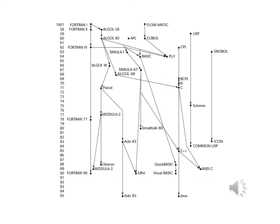The chart shows how the evolution of various programming languages took place. You can see how Fortran 1 led to Fortran 2, and in turn to Fortran 4, Fortran 77, and Fortran 90, which is similar to predecessors in some ways and very different in others.